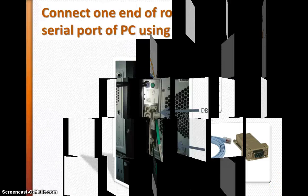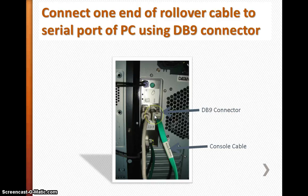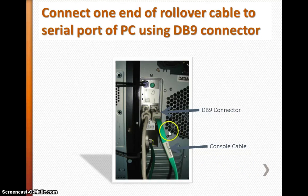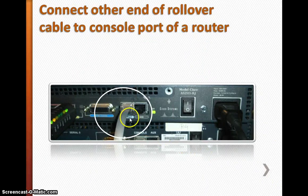Once you have the rollover cable, connect the DB9 connector to the serial port of the PC as shown. Then connect the console cable to it — that covers the PC side. On the second side, you connect to the router console port, which is usually marked 'console' on the router.